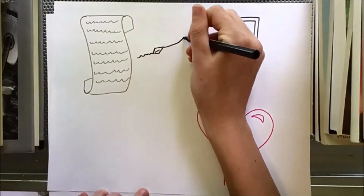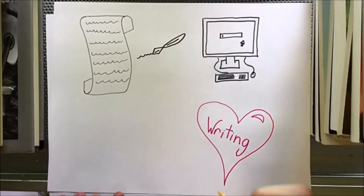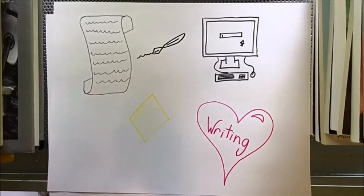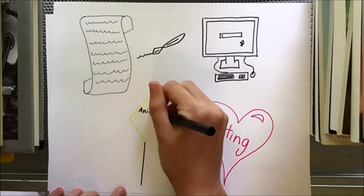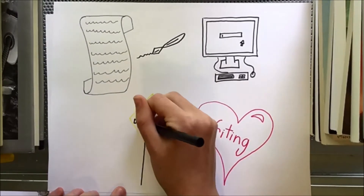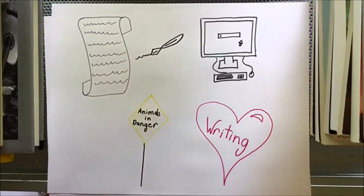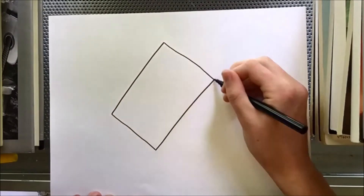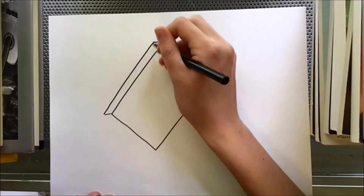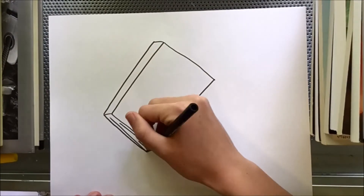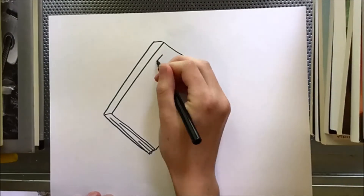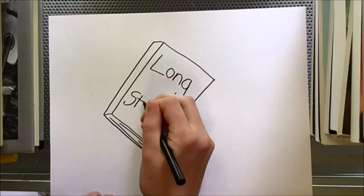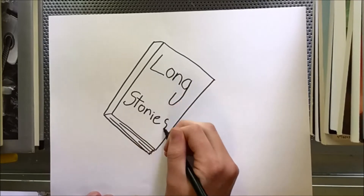At first I was going to write about how things work. Then I was going to write short stories from the perspective of animals who are endangered by a man-made problem. Then finally, I decided with the help of my teacher to go ahead and write long stories, which is exactly what I did.